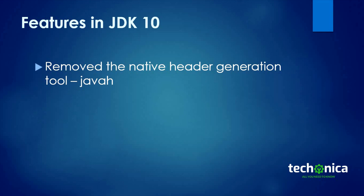The javah header generation tool was removed because in JDK 9, the javac compiler superseded its functionality. The Java 9 release provided the ability to write native header files at the time Java source code is compiled, thereby eliminating the need for a separate tool. So in Java 10, because this separate tool is no longer required, javah has been removed.